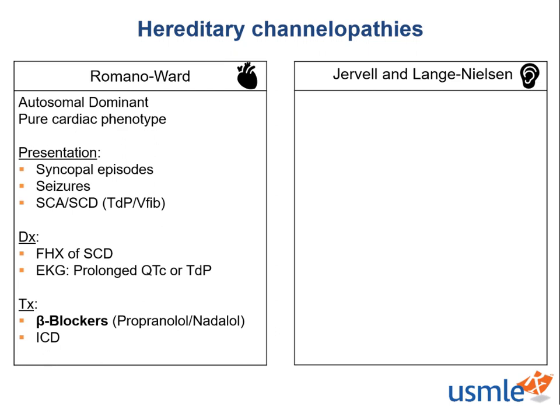Jervell and Lange-Nielsen syndrome is an autosomal recessive disease that causes long QT syndrome and also causes congenital severe bilateral sensorineural deafness. A helpful mnemonic: the syndrome with two names involves two body parts — the heart and the ears. These babies are born completely deaf in both ears, which can be a big clue in question stems. There may be a family history of sudden cardiac death, but because it's recessive, there doesn't have to be. These patients will often present with cardiac events in early childhood, as opposed to adulthood.